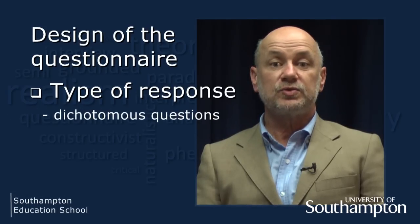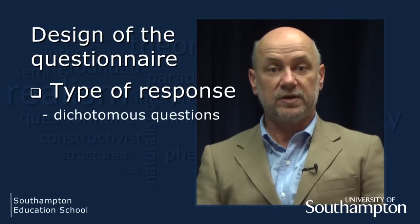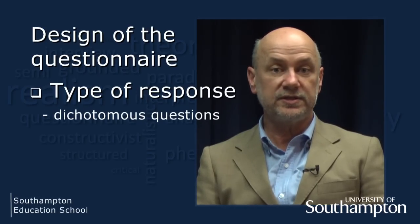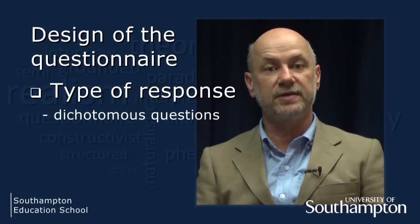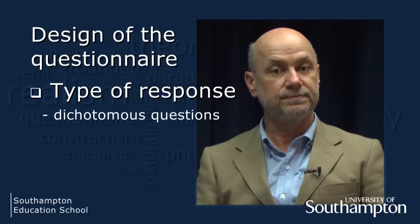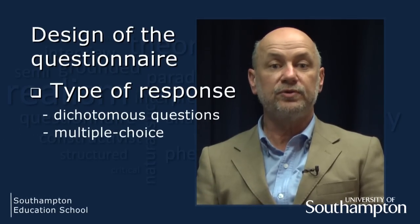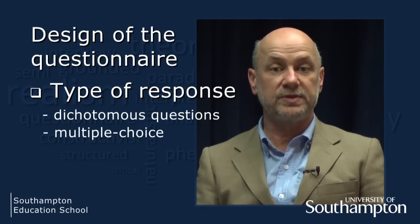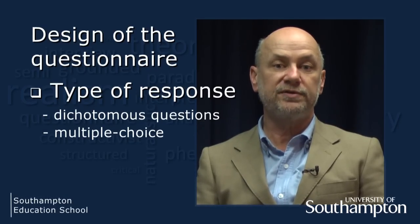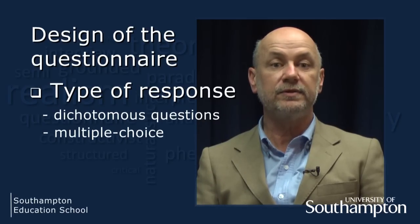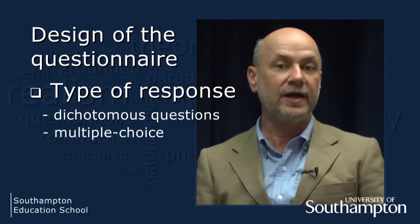Dichotomous questions are those where only one of two answers is possible. They are the easiest to ask, to answer and to code, and there is little danger of interview bias. Yes-no questions are the best known examples. Dichotomous questions collect category level data. Multiple choice questions offer three or more choices — for example, you could ask people to indicate which mobile device they use and give them the choice of iPod, iPad or another.